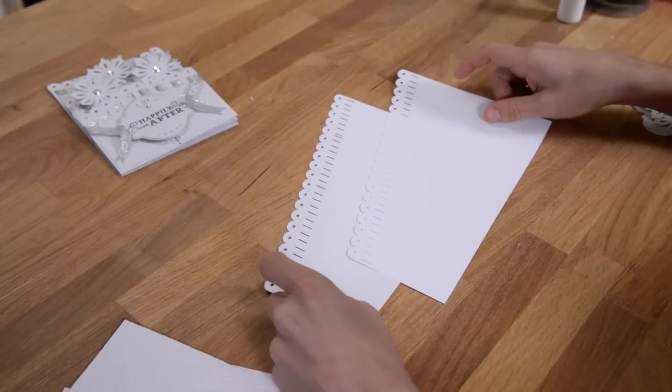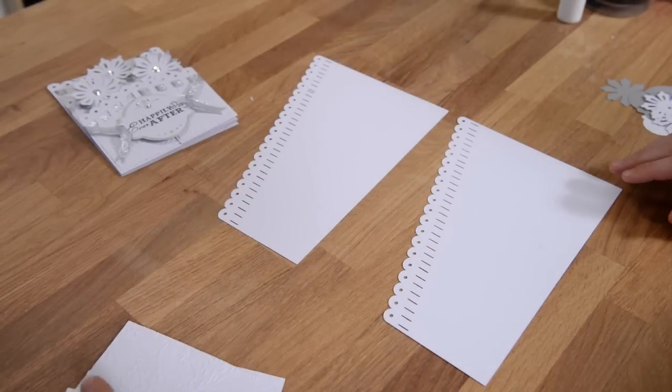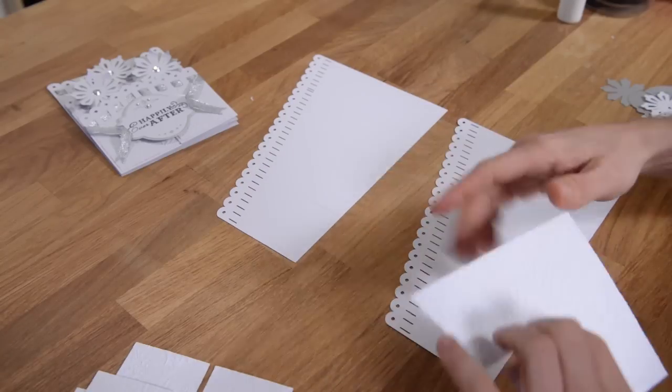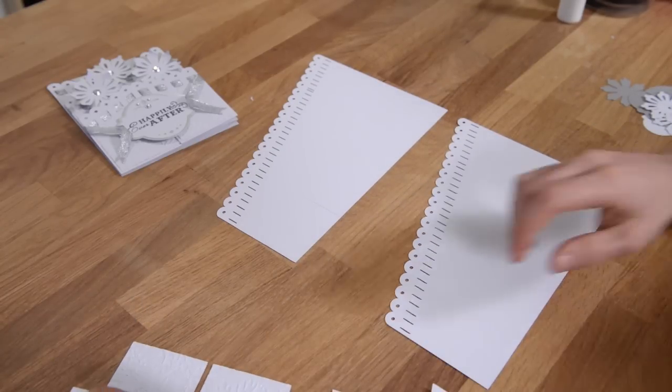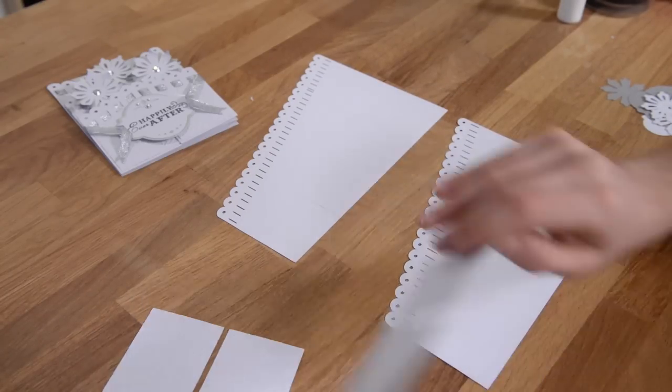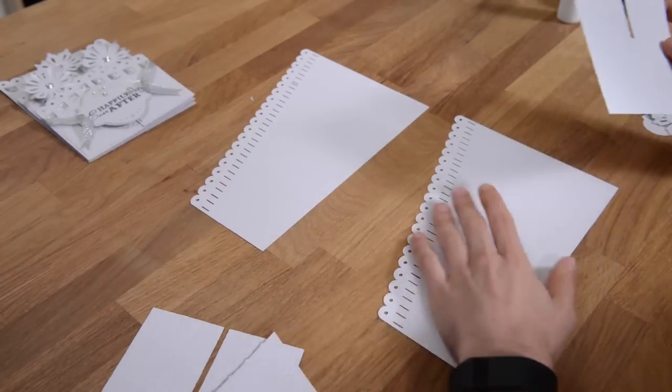Okay, in this video, we're going to show you how to put together the Daisy Cascade card. So you're first going to want to start with these main pieces here. And just like our other cards, we have little panels that we've embossed and they really only fit one way.